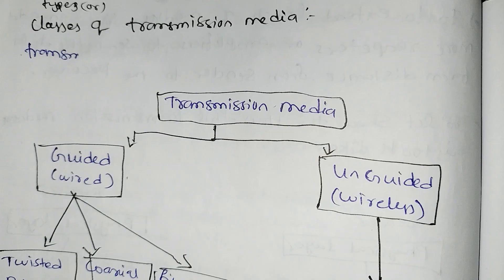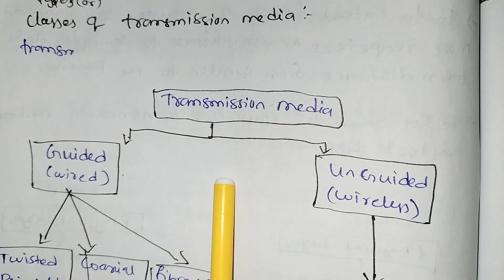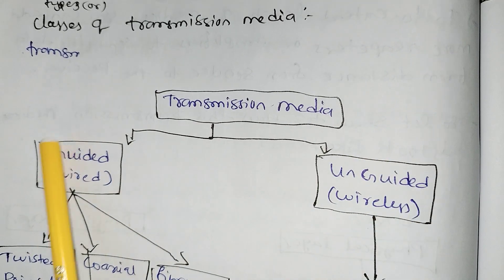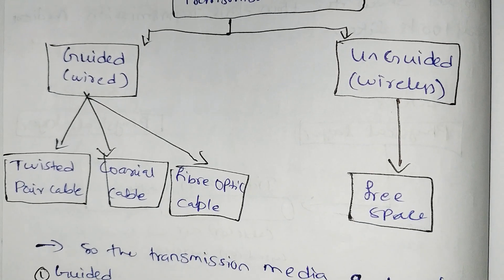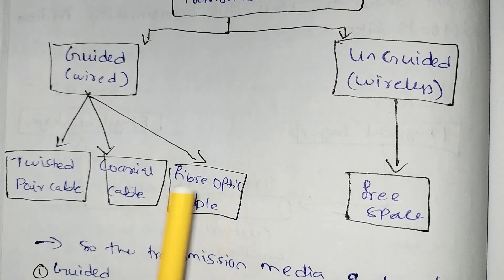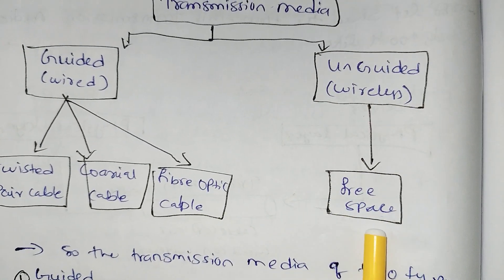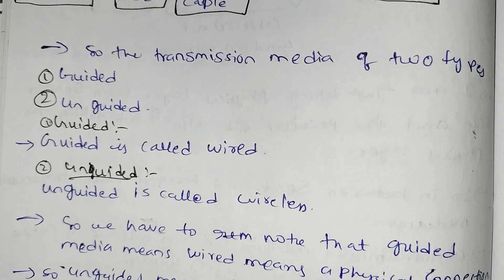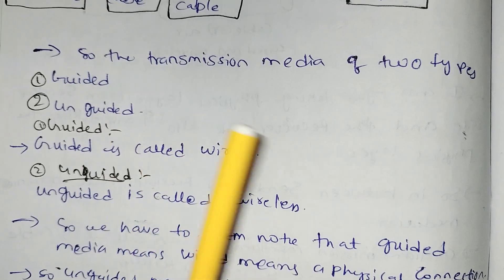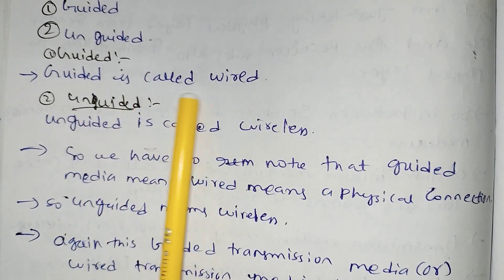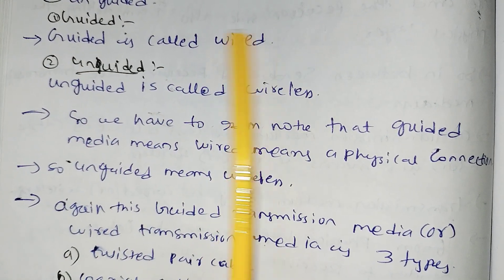There are two types, or classes, of transmission media: one is guided and one is unguided. Guided means wired; unguided means wireless. Under guided, there are three types: twisted pair cable, coaxial cable, and fiber optic cable. Unguided means wireless — wireless means free space. Guided is called wired and unguided is called wireless.